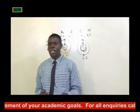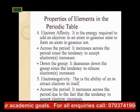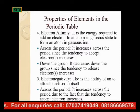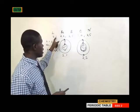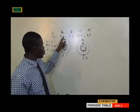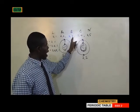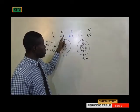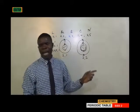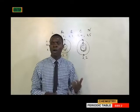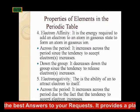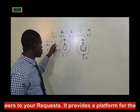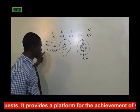The fourth property of elements in the periodic table is electron affinity. It is the energy required to add an electron to an atom in a gaseous state to form a gaseous ion. Across the period it increases, since the tendency to accept an electron increases. Down the group it decreases, since the tendency to release an electron increases and the attraction is less as you go down.